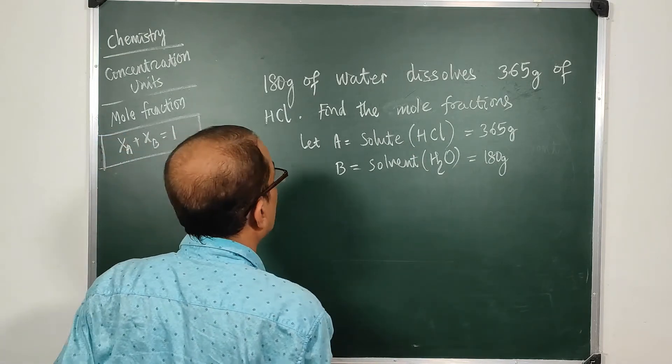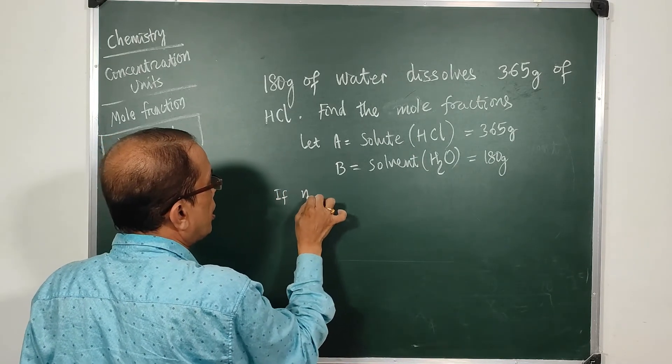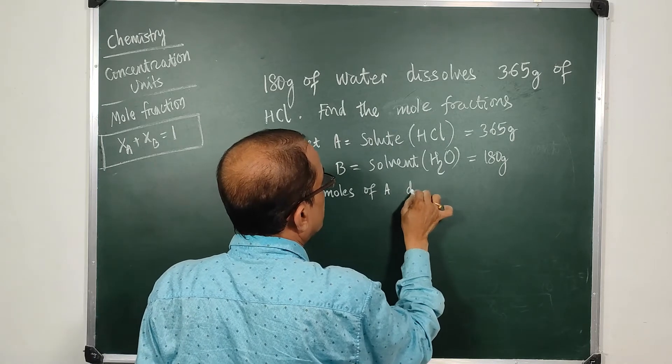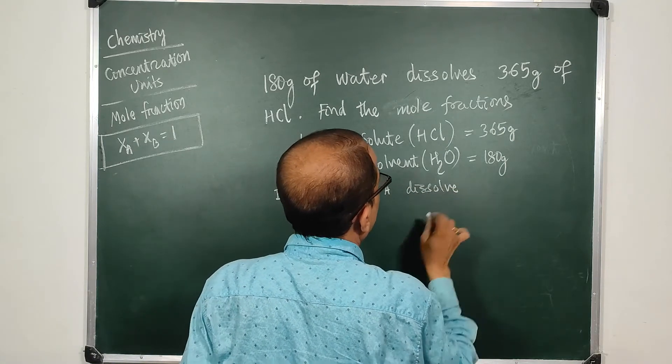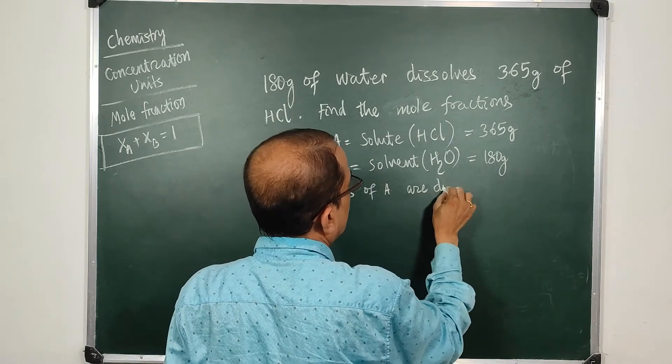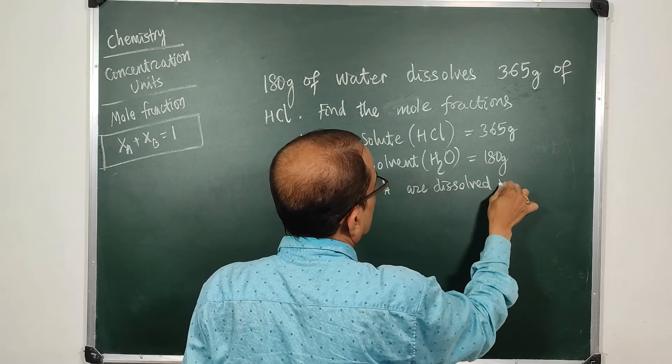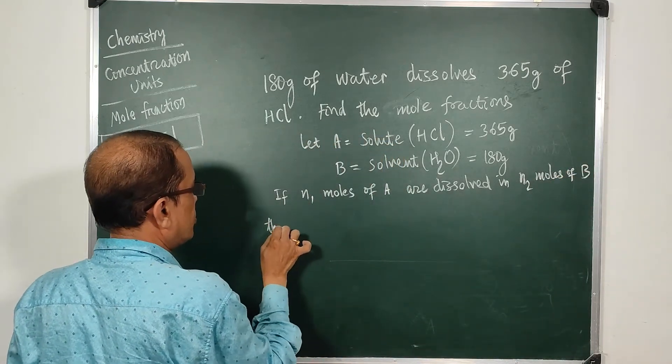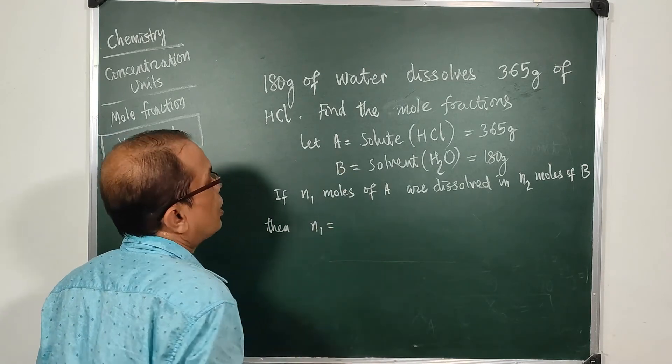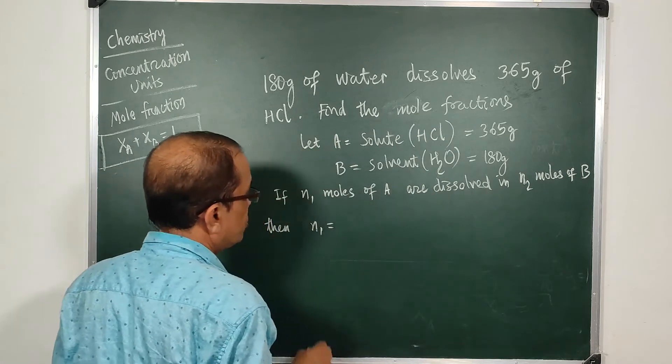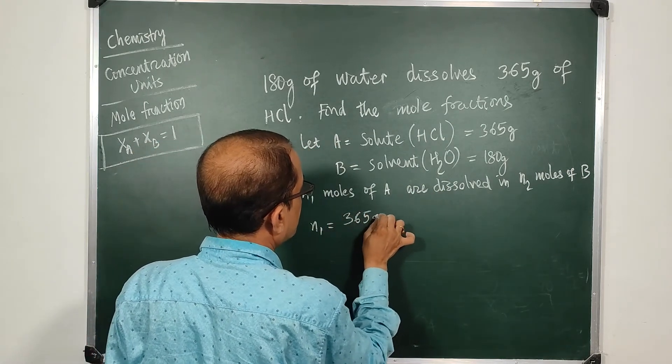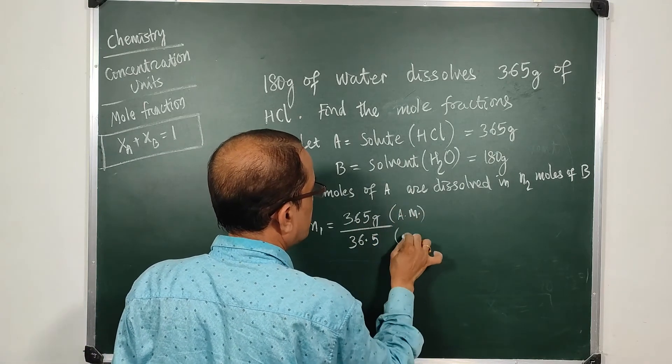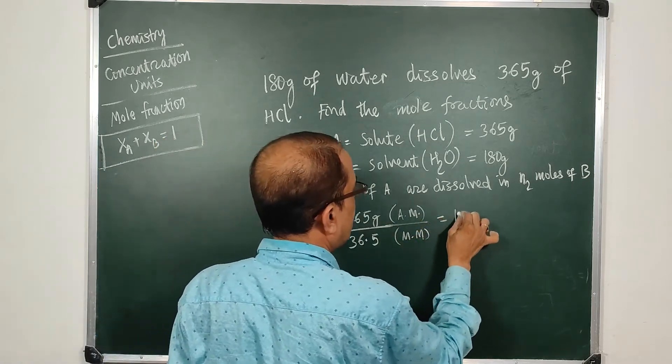If n1 moles of A are dissolved in n2 moles of B, then here n1 is moles of A, means moles of solute HCl. So this is 365 grams divided by 36.5. Here it is actual mass and this is molecular mass, so when we divide we get 10 moles.